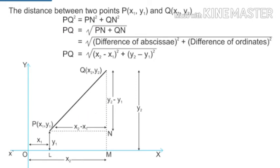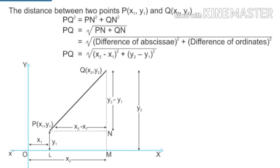The only thing left is to find the hypotenuse, which is PQ. Applying the Pythagorean theorem: PQ² = PN² + QN². Moving the square to the right-hand side gives a square root, so PQ = √(PN² + QN²). Note: make sure to include the square for both terms.